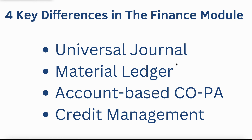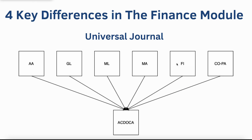Now let's take a look at the key differences in the finance module, covering Universal Journal, Material Ledger, Account-based Profitability Analysis, and Credit Management. The first and most commonly discussed change in the finance world of S4HANA is the introduction of the Universal Journal. S4HANA consolidates various data modules into a unified table known as ACDOCA. This integration encompasses asset accounting, general ledger, material ledger, management accounting, finance, and profitability analysis. By incorporating all these modules into one table — ACDOCA — the system eliminates the need for numerous aggregates and index tables, leading to a significant reduction in data footprint and enhanced system efficiency.